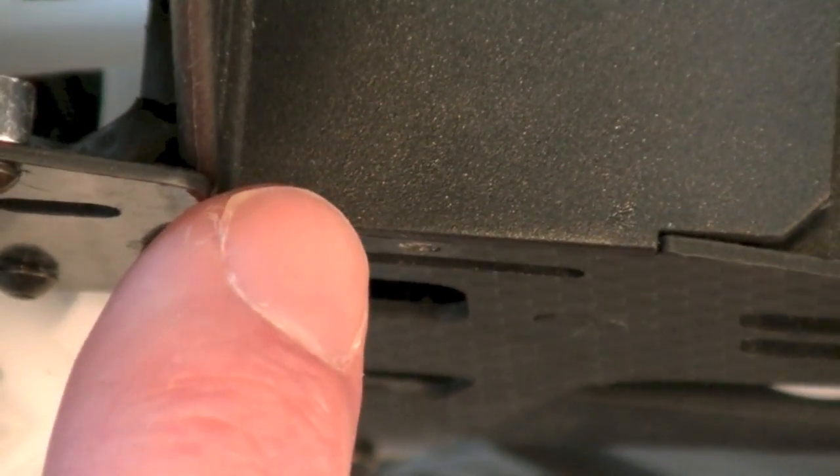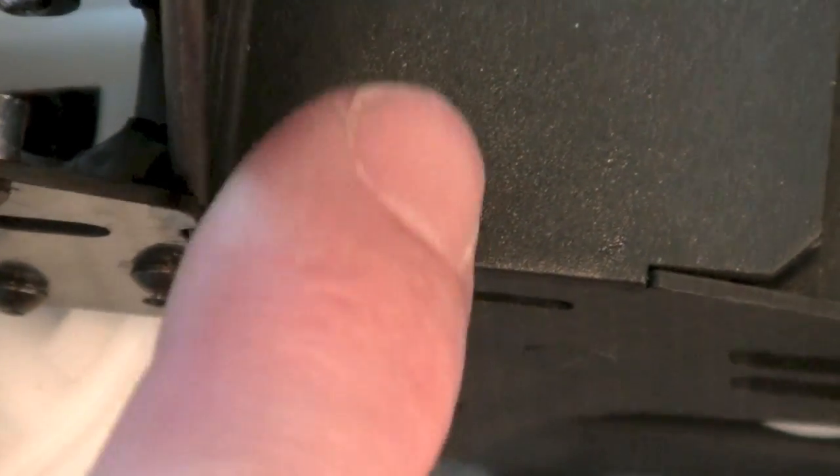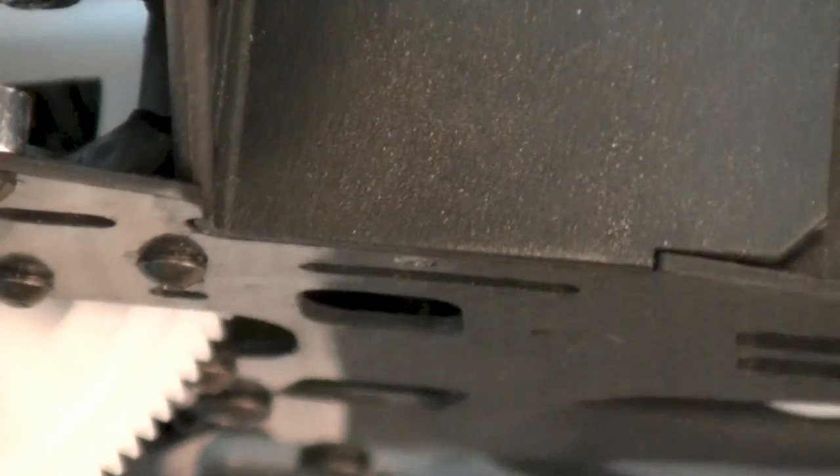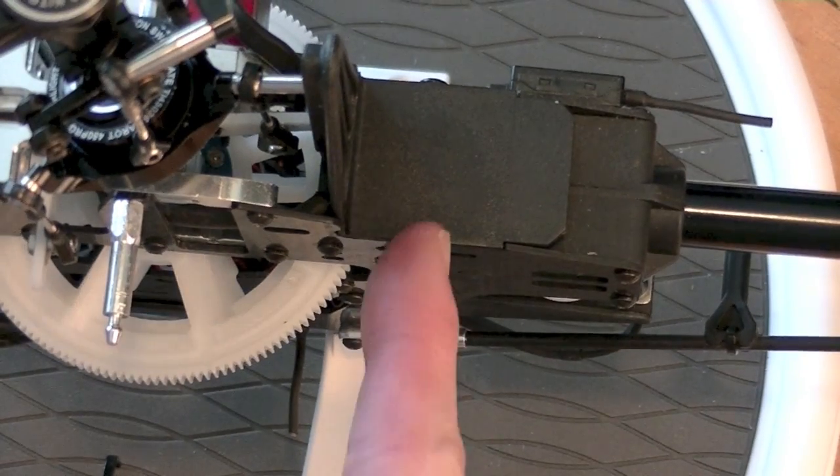And this one, ironically, isn't even thread locked. It's just a regular screw into plastic. It goes into this anti-rotation bracket here. And like I said, literally just snapped this screw off.